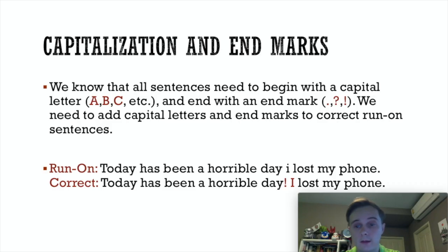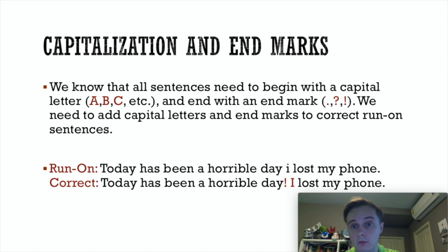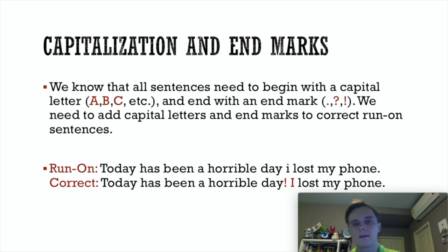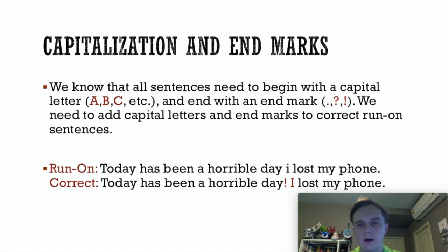Just to recap what we've already done: you know that sentences need to start with a capital letter and you know that they need to end with an end mark. When you've been writing, I've told you to make sure you avoid run-on sentences. A sentence should have one subject and one predicate unless you are making a compound or complex sentence. If you've got simple sentences, just one subject, one predicate, you separate them by adding an end mark and a capital letter.